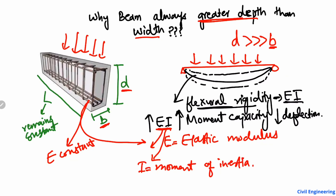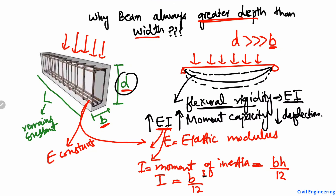The moment of inertia depends on the shape of the object. For a rectangular beam, the moment of inertia is equal to BD³ divided by 12. Looking at this equation, B (width) appears with a power of one, while D (depth) appears with a power of three.